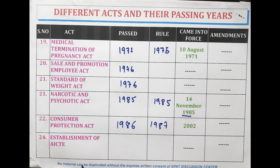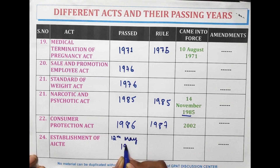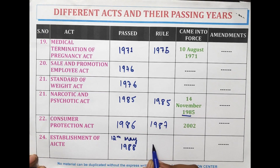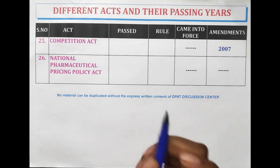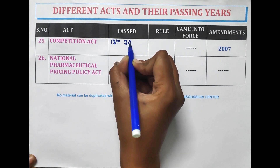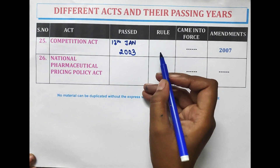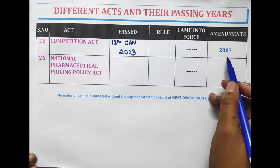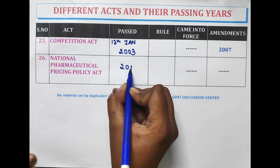The establishment of AICT was in the year 1988 on 12th May, and rules in 1988 on 28th March. The Competition Act came into force on 13th January 2003, with amendments in 2007. The National Pharmaceutical Pricing Policy Act was passed in the year 2012.